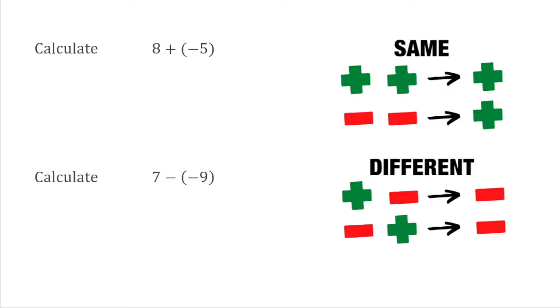For this first example, I've got 8 plus negative 5. I've got a double sign there - a plus followed by a negative. Since I've got different operations, I can replace that with a single negative. So I can rewrite this as just 8 take away 5. Now we have a nice simple question: 8 take away 5 is just 3.